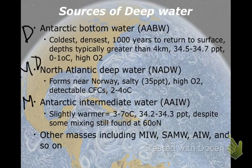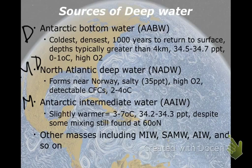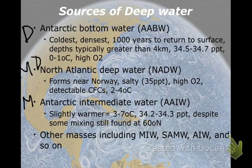The Mediterranean Intermediate Water (MIW) is unique to the Atlantic Ocean — you will not find it in the Pacific. It's very, very salty — upwards of 40 PPT — so it wants to sink. But it's also very, very warm, so it wants to float. The Mediterranean Intermediate Water actually forms a pocket within the Antarctic Intermediate Water, which makes it kind of unique.